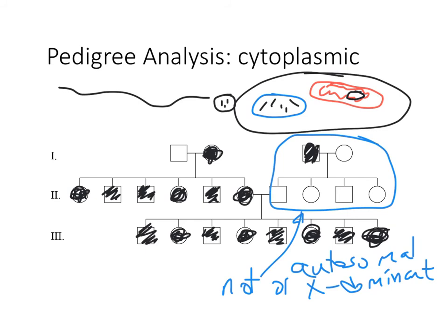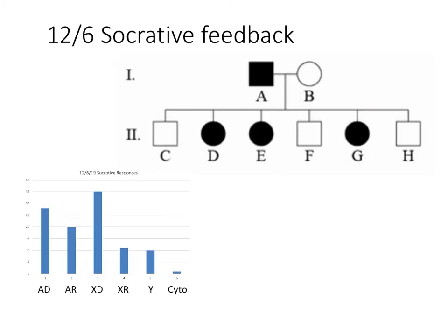So to summarize: autosomal dominant, autosomal recessive, X-linked dominant, X-linked recessive, Y-linked, cytoplasmic. Applying this to the pedigree from last class — many of you answered X-linked dominant, followed by autosomal dominant, autosomal recessive, X-linked recessive, Y-linked, and cytoplasmic. Is this cytoplasmic? No — because it's the father that's affected, and dad doesn't pass on cytoplasm. Which other can we rule out? Y-linked — because it's not passing from fathers to all sons; it looks like fathers to all daughters.